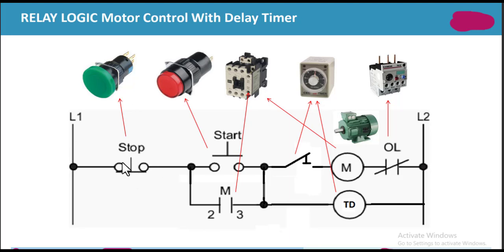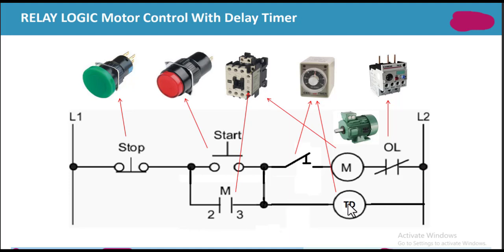The stop switch is normally closed, so current can pass through it to this point. This is the normally open start switch — when we press it, it will be turned on and current can flow through to this point. This is the timer's contact, which is also normally open, and current can flow through this point to the timer.